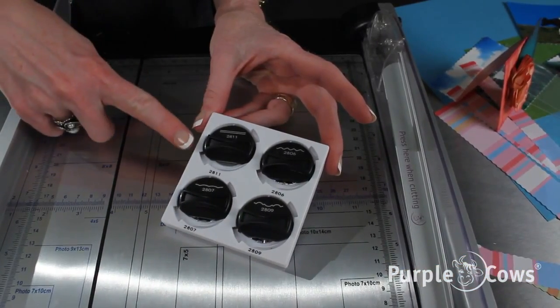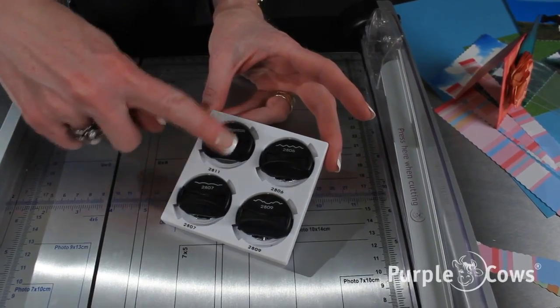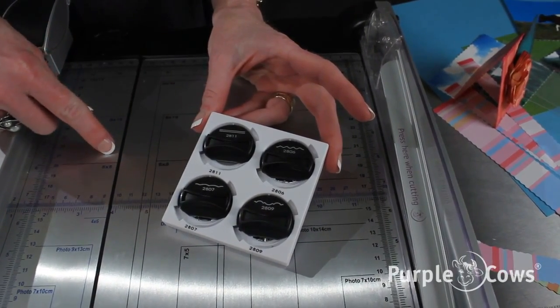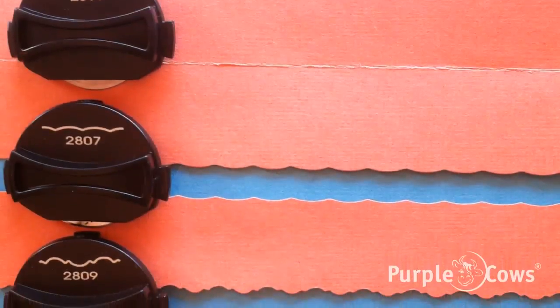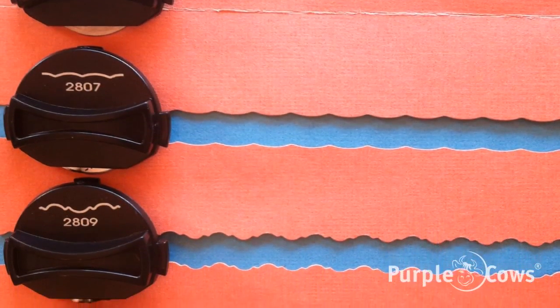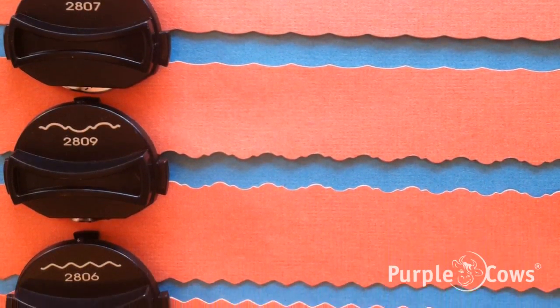The trimmer also comes with these four click blades exclusively at Costco. You get the scoring blade, the pinking blade, the Victorian blade,